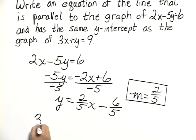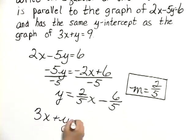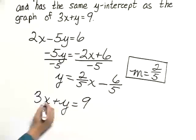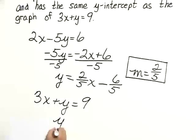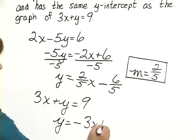Again, we solve for y. We have 3x plus y equals 9. We subtract 3x from both sides, and we have y equals negative 3x plus 9.